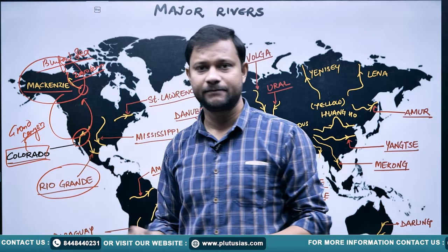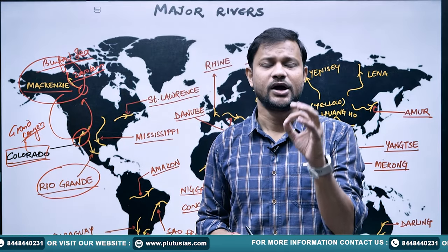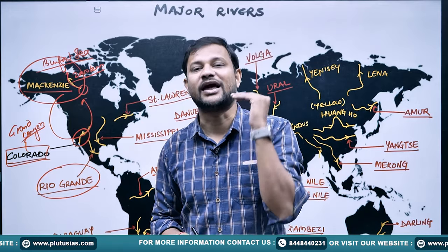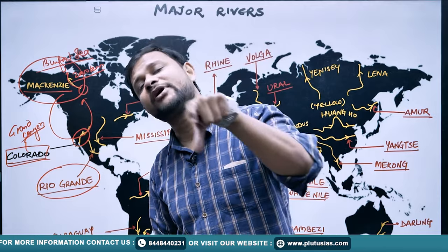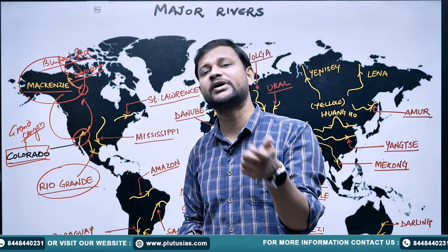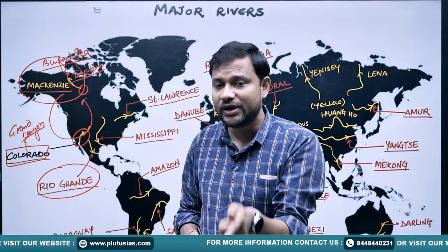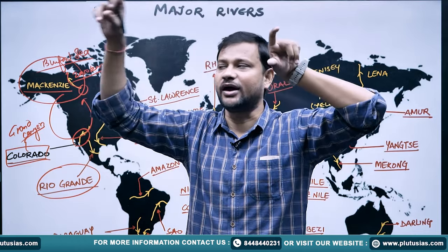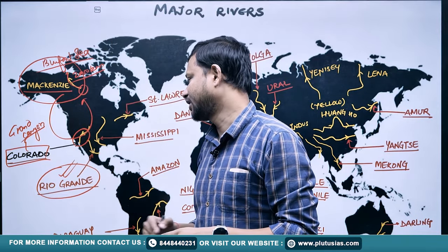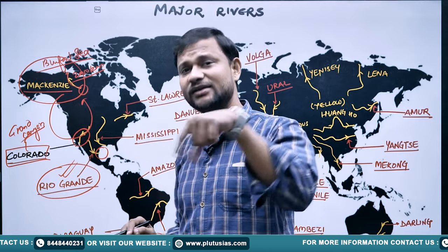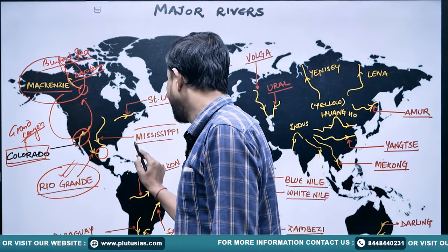Next is the Rio Grande. This river lies on the boundary between the US and Mexico. There have been exam questions asking which river defines the boundary between the US and Mexico, or to identify the correct river-boundary pair. The Rio Grande drains into the Gulf of Mexico.